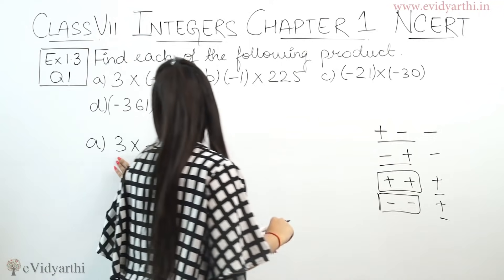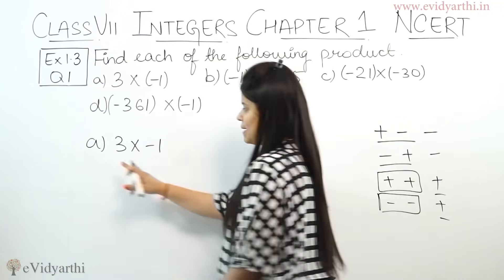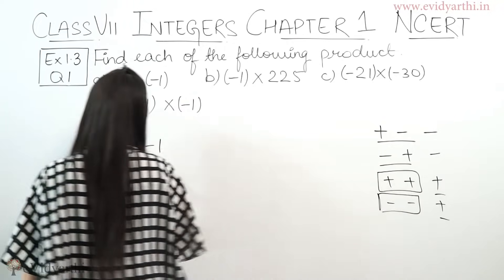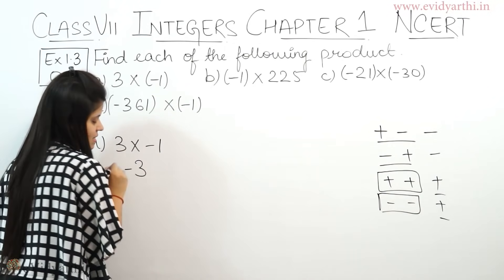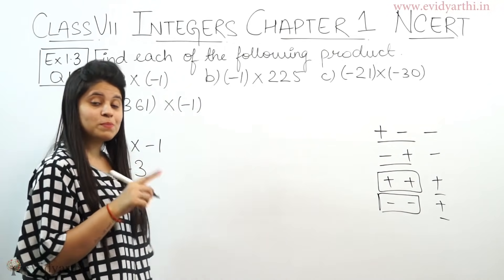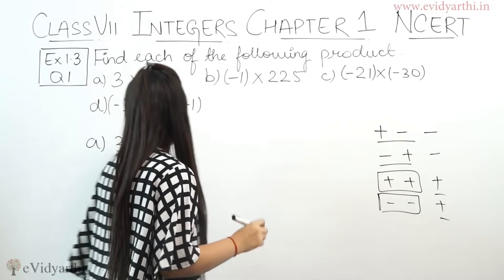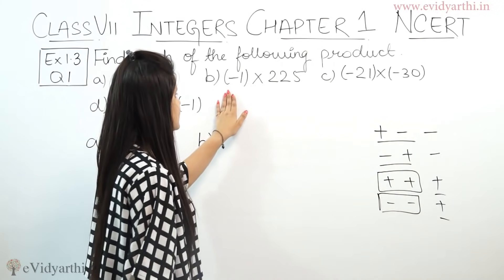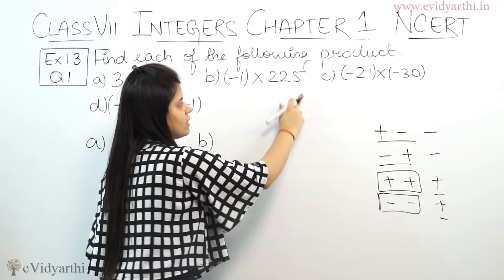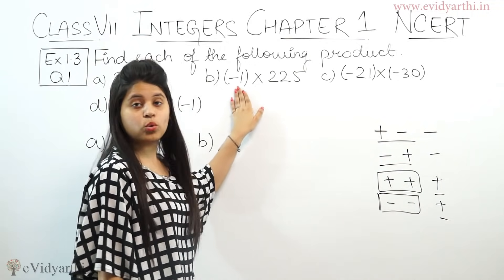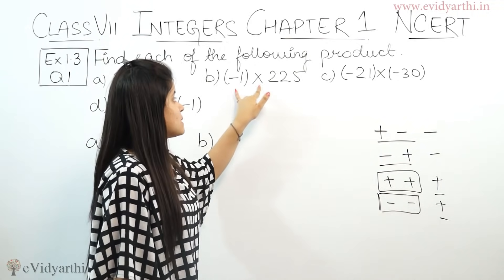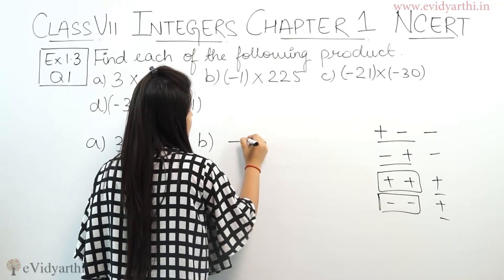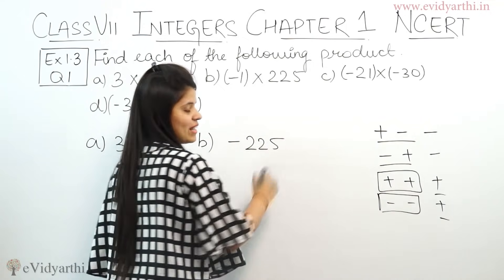So here we have one plus and one minus — plus × minus = minus. 3 × 1 is 3, so you get minus 3. Part B is minus 1 × 225. Again 225 × 1 is 225, and plus × minus = minus, so this is minus 225.